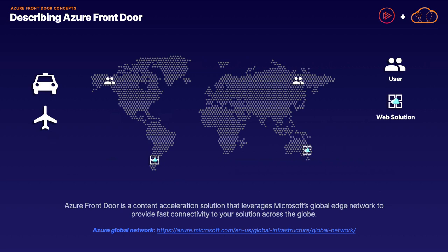Traditionally, whenever a user wants to connect to a service, they'd have to take that long trip all the way to the region where the service exists to get that content. But because Azure Front Door provides edge locations as part of the Microsoft backbone, we can provide closer locations for users to enter the Microsoft network. Then over Microsoft's high-speed private connections, the user can quickly connect to the services going over that Microsoft backbone, enabling content acceleration and the ability to cache content at those edge locations.